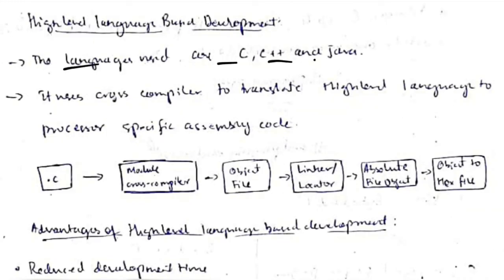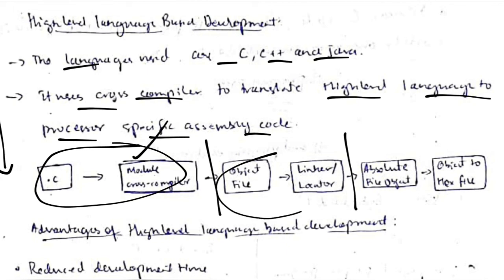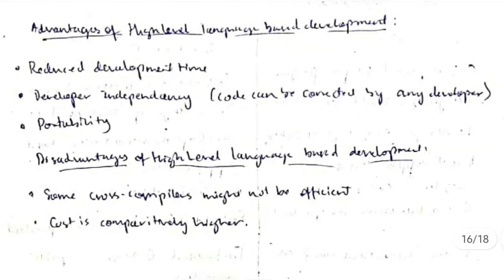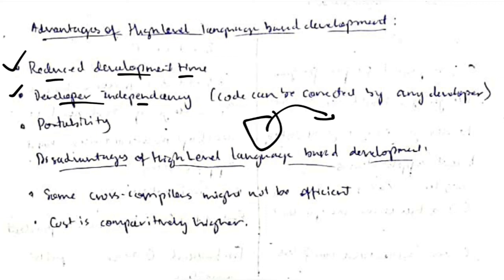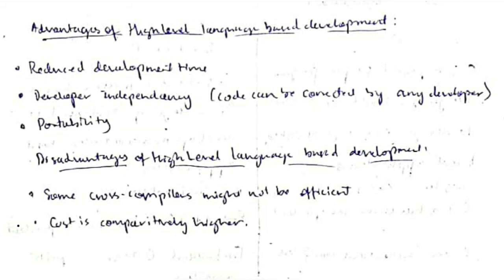The second language type is high-level language — C, C++, and Java — using a cross compiler that translates high-level code to processor-specific assembly code. The source file is converted to an object file by the cross compiler, then to a hex file by linker and locator. Advantages include reduced development time, developer independency (errors can be fixed by any developer), and high portability across different environments.